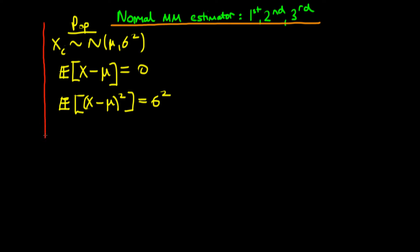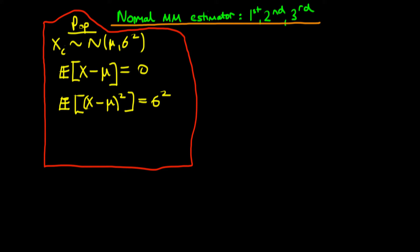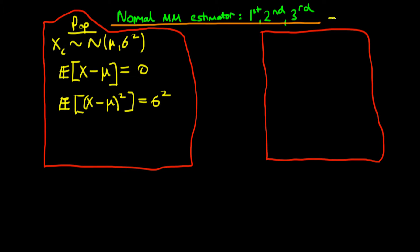These are our population moment conditions. What we're going to do is come up with analogues in our sample, and they're going to be our method of moments estimators for the parameters mu and sigma squared. For each of these moment conditions we're going to come up with the sample analog. Starting with the first population moment condition, the sample equivalent — whenever we see the expectation sign, all we need to do is replace it by the sample equivalent, which is just the sample mean.